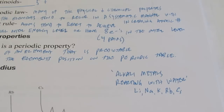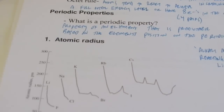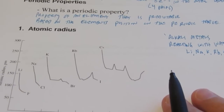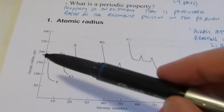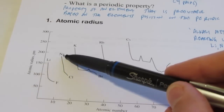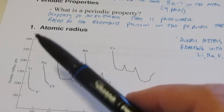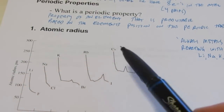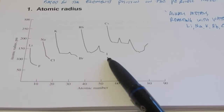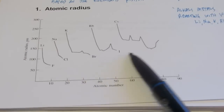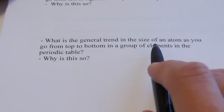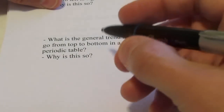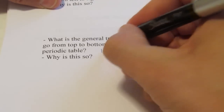A periodic property we really need to discuss is atomic radius — this helps us understand all other periodic properties. This graph shows atomic radius versus atomic number. Going from lithium to sodium to potassium to rubidium to cesium — group one, the alkali metals — the atomic radius increases. Looking at the halogens — fluorine, chlorine, bromine, iodine, and astatine — going down that group, the atomic radius also increases. So the general trend going from top to bottom in a group is that the element's radius gets bigger.